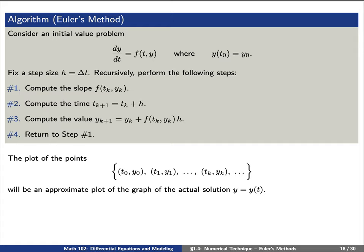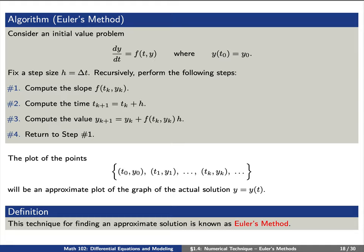We'd like to plot these points t0, y0, t1, y1, and so forth, which will give us an approximate plot of the graph of the actual solution y equals y of t. This technique of finding an approximate solution is known as Euler's method.